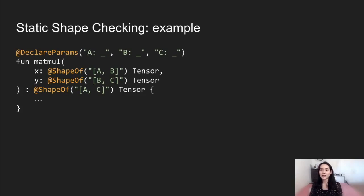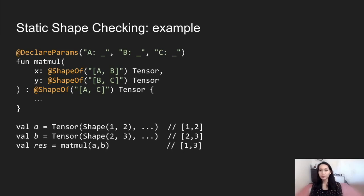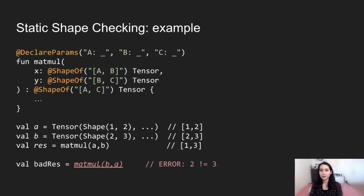Here's an example of how you can provide static shape checking for the matmul function, which implements a matrix multiply. Matmul takes two two-dimensional tensors and requires that the inner two dimensions match. The second dimension of X is the parameter B, and the first dimension of Y is also parameter B. The shape of A is inferred to be [1, 2] and the shape of B is inferred to be [2, 3]. The value res from a correct matmul produces a tensor of shape [1, 3]. Bad_res shows an incorrect usage, which will result in a compile-time error as the inner dimensions do not match.